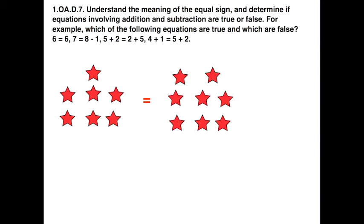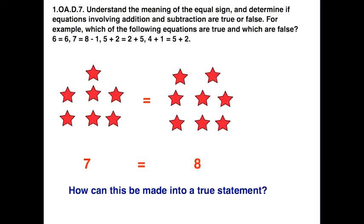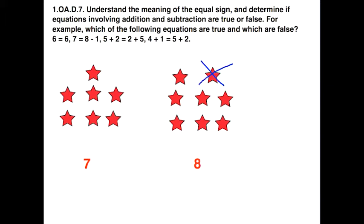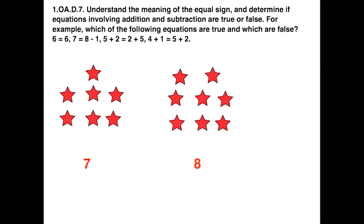Let's say we start off with two sets of the same items. Students count and realize they have 7 on the left but 8 on the right-hand side — so that is not a true statement, those are not equal, so it's false. A good extension would be to ask, how can I make this into a true statement? Some students might take 1 away from the right-hand side, giving 7 equals 8 minus 1 — just like one of the examples in the standard. Now it is a true statement because there are 7 on both sides.